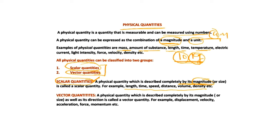The second is vector quantity. A vector quantity is a physical quantity which is described by magnitude as well as its direction — we need direction to describe it. For example, displacement, which is distance with direction; velocity, which is speed with direction. Physical quantities that require direction are called vector quantities. Some more examples are acceleration, force, momentum, etc.